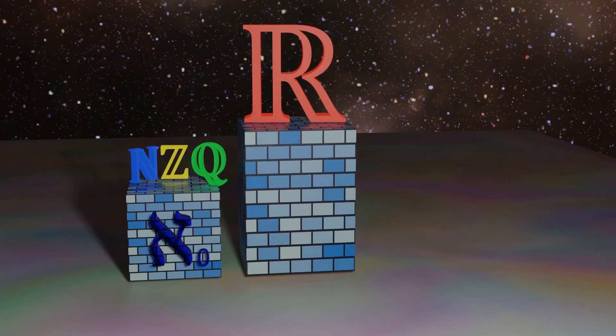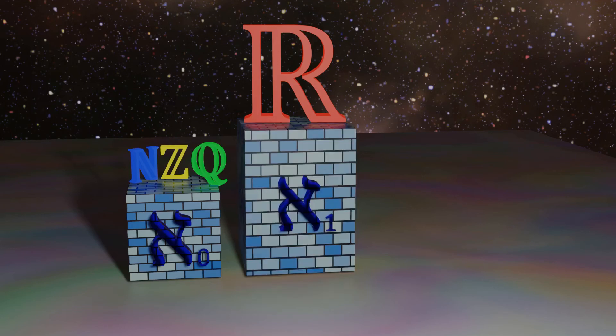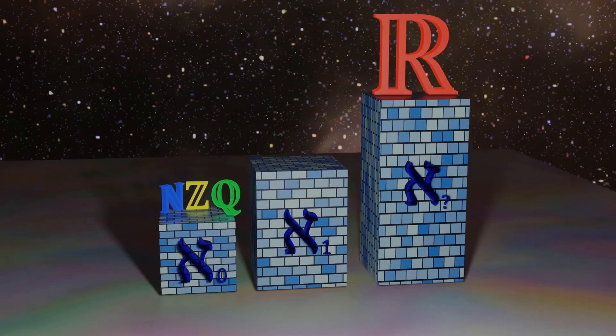So far, we have found two different sizes of infinite sets, with the reals being larger. But we can ask ourselves, is this larger set the next infinite set after the naturals? Or, can we find yet another infinite set with a size between the naturals and the reals?